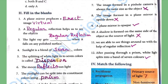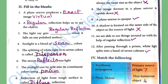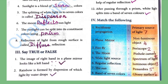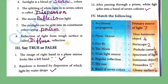Fifth: The splitting of white light into 7 colours is called dispersion. Sixth: The moon reflects the sunlight — the moon is a non-luminous object, so it only reflects sunlight. Seventh: Sunlight can be split into its constituent colours using a prism. Eighth: Reflection of light from a rough surface is called diffuse or irregular reflection.